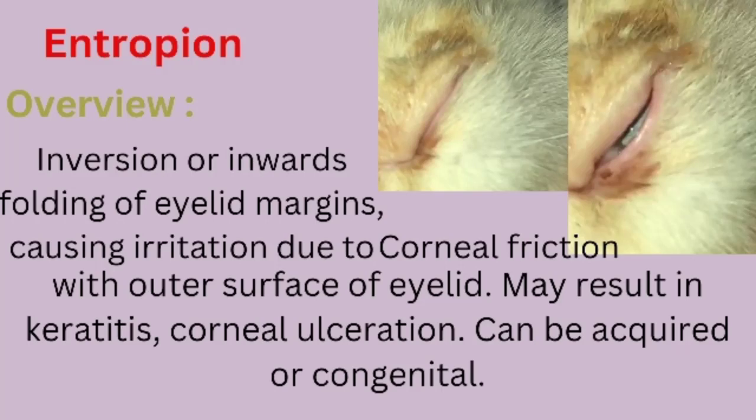Hi, I am Dr. Naman Vashir and you are watching my YouTube channel. I hope you are all fine. Now our today's lecture is about entropion. Entropion is a condition related to the eye. It can occur in dogs and in cats.